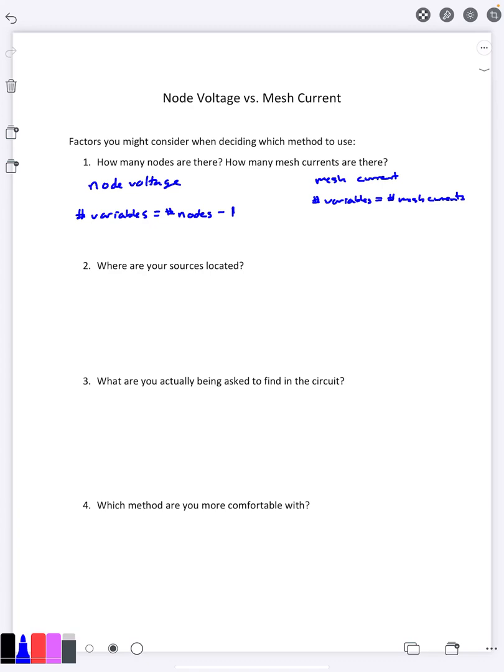So it's a very good idea to look at this, see how many equations you're looking at, and that right there can decide how complicated one of those is going to be. On the other hand, what if you get the same number of variables? What are you going to do next? Well, look at where your sources are located.